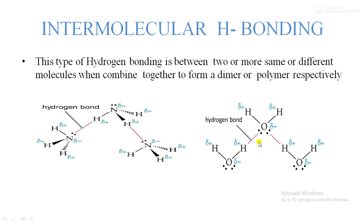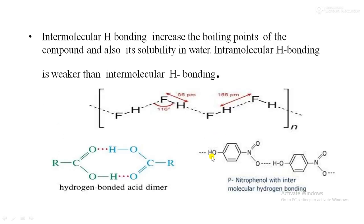Similarly, we can see water molecules here. Oxygen has an electronegative atom and hydrogen has an electropositive character. The hydrogen bonding is shown here by a dotted line.